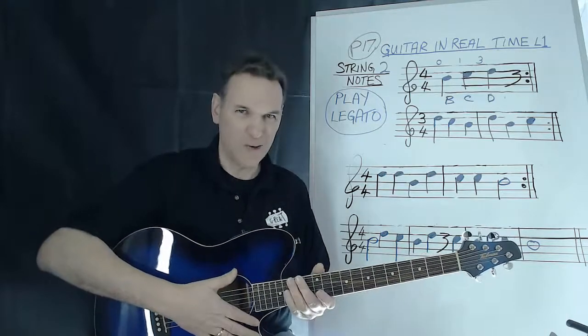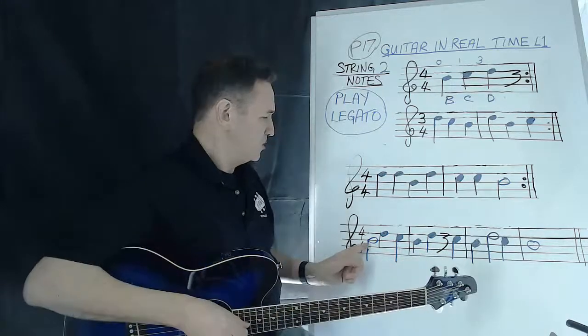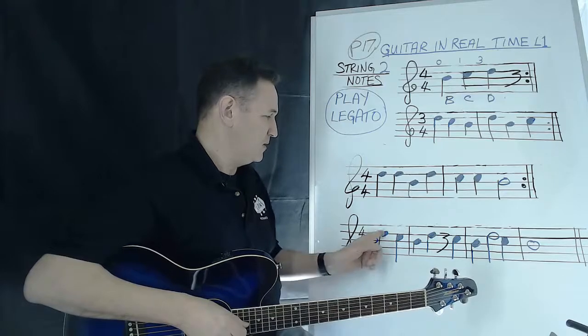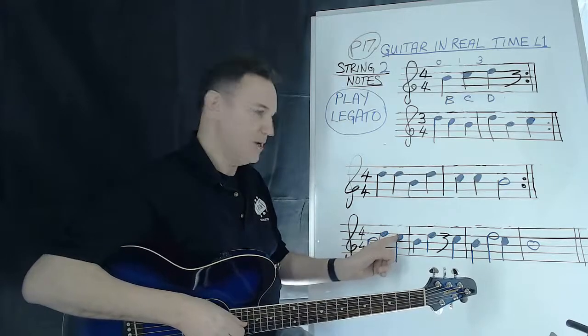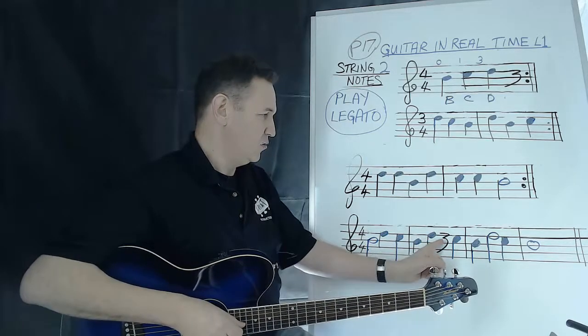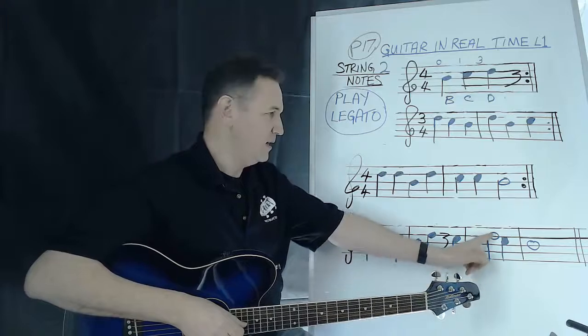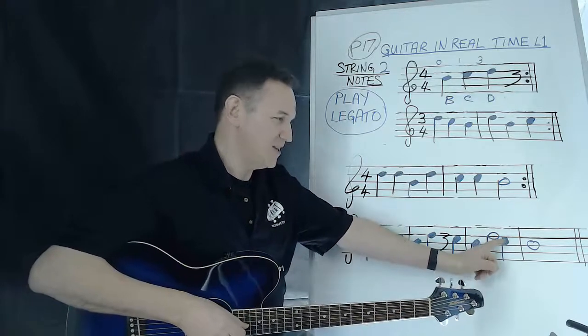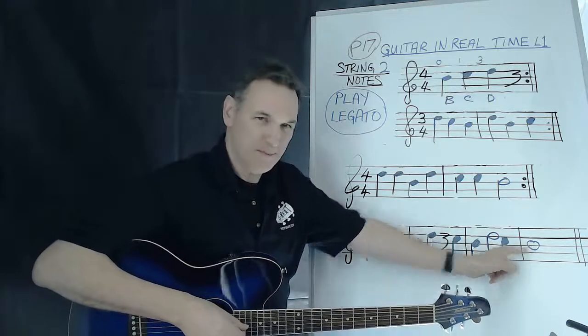There we go. So here we have a B, D, C. B, D, rest, C. B, D, C, B.